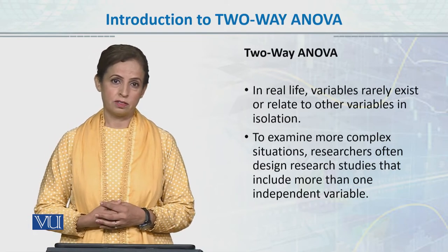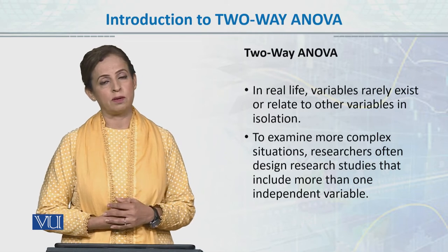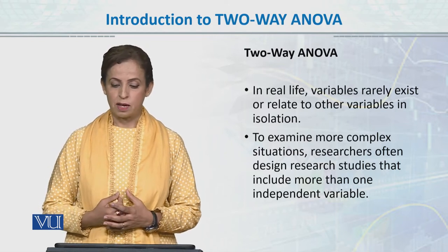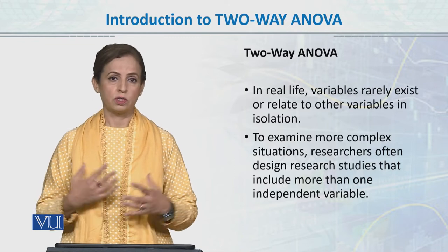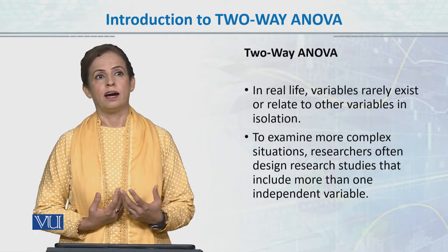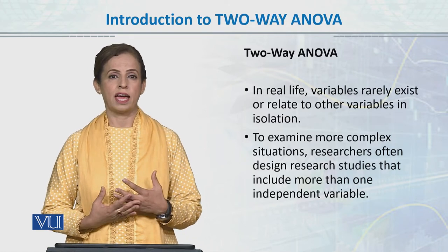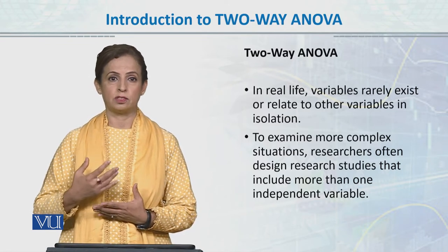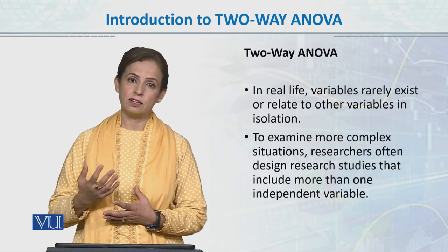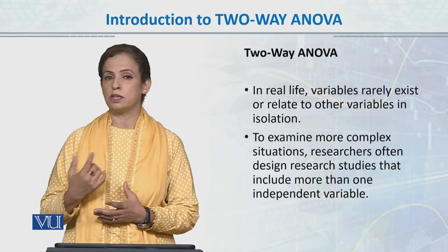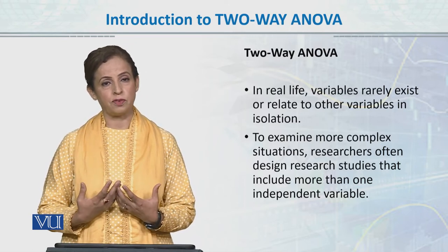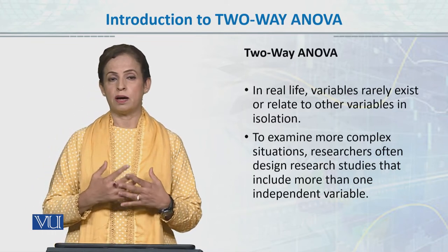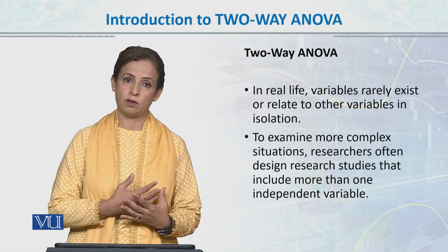Two-way analysis of variance or factorial analysis of variance allows us to add more variables into the data. In real life, variables rarely exist in isolation. For example, if I want to study how much I can reduce my weight while doing exercise only, there may be some effect of exercise on weight reduction, and someone doing only diet control may also see an effect. But combining exercise and diet control together produces a hugely different impact on weight loss.